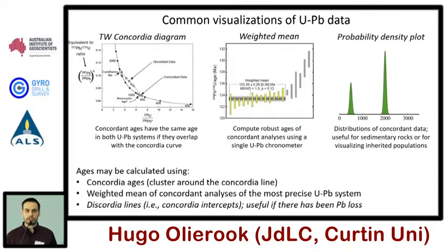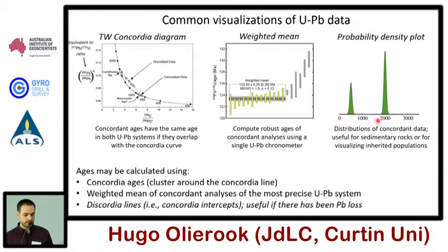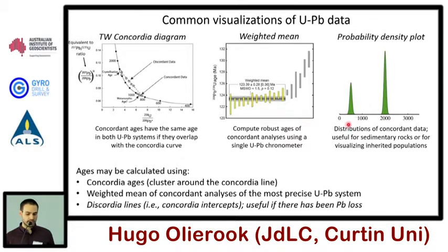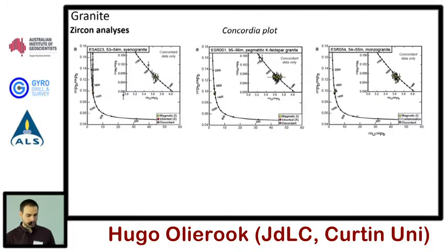For sedimentary and meta-sedimentary rocks you usually have a whole bunch of different grains, so taking a weighted mean age doesn't really work. Instead, one of the other things we look at is probability density plots. For example, in this example you can see about double the proportion of 2000 million year old grains and a subordinate proportion of 1000 million year old ones.